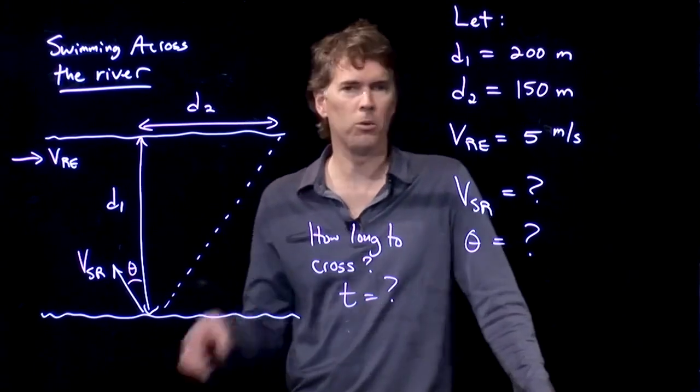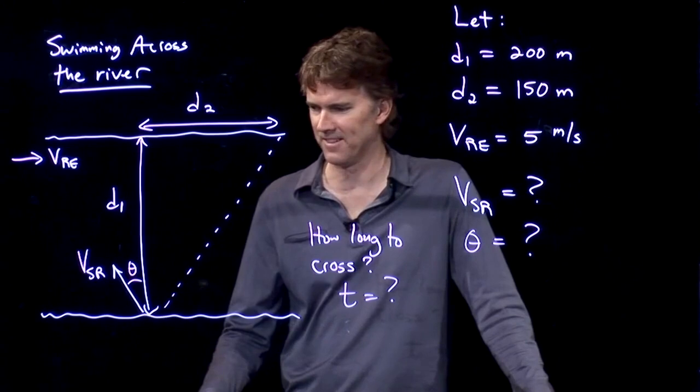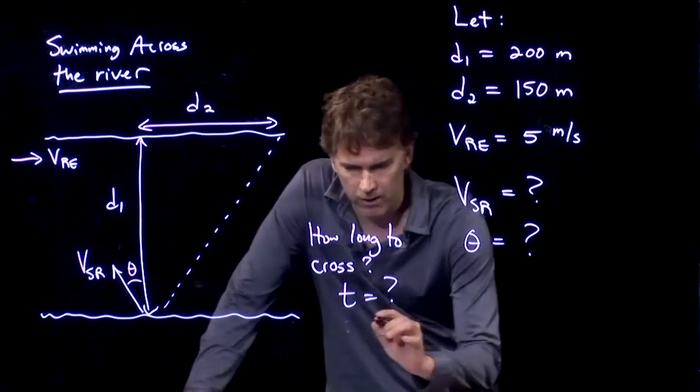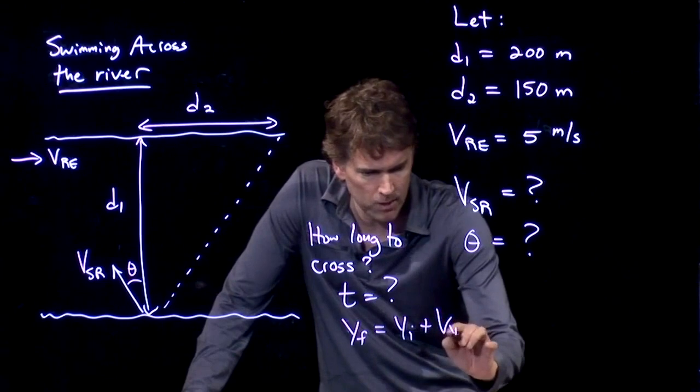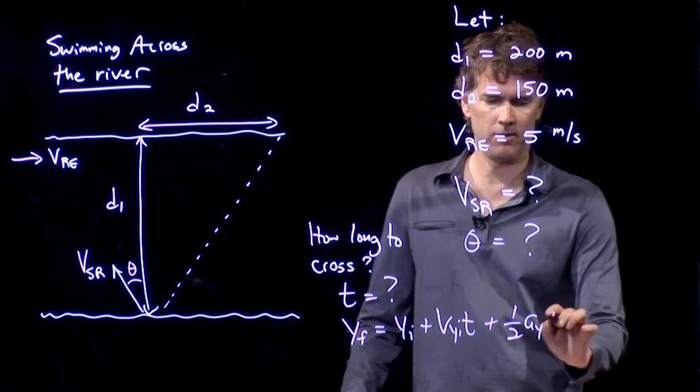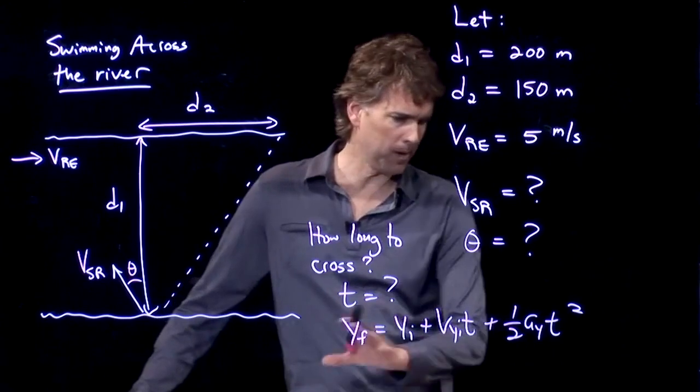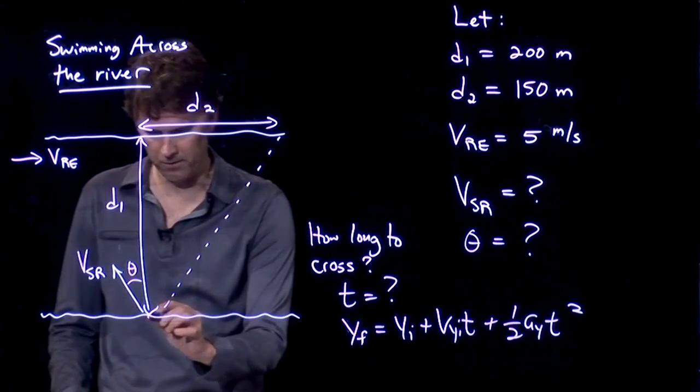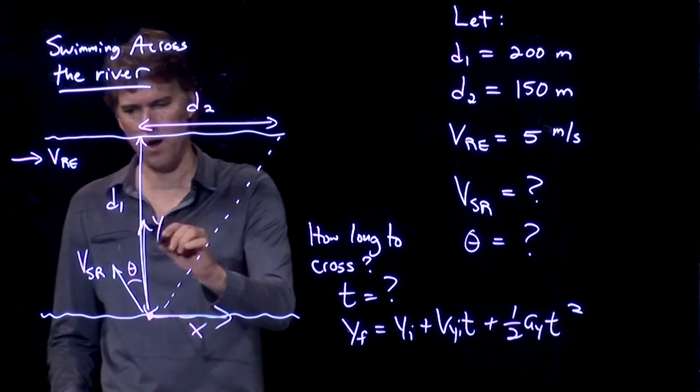Alright, let's use one of the kinematic equations. So, one of our kinematic equations looks like this. y final equals y initial plus v y initial times t plus 1 half a sub y t squared. That looks like a good one. Anytime we write down a kinematic equation, we should immediately say, oh, we need a coordinate system. Let's put our origin right there, we'll say x is to the right, and we'll say y is up.